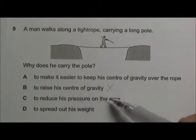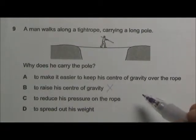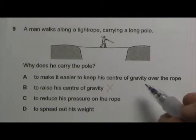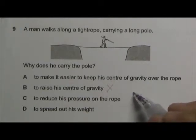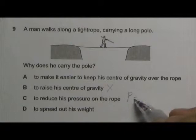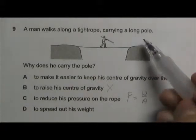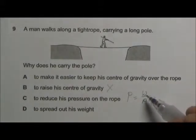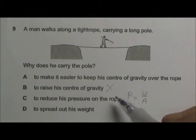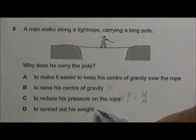To reduce his pressure on the rope, this is not right as well because as he is carrying a pole with him, he actually increased the weight and since pressure equals the force, in this case it will be his weight over area. The long pole will add on to his weight, hence the pressure will be higher. So this is not right as well. And to spread out his weight, it doesn't really spread out his weight because the weight is still at the center. So this is not right.